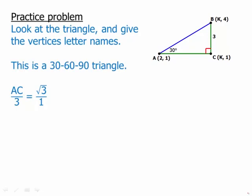So of course this is a 30-60-90 triangle. We studied these in the geometry lesson. And we know that we can set up a ratio AC/3 = √3/1. Cross multiply, we get AC = 3√3.